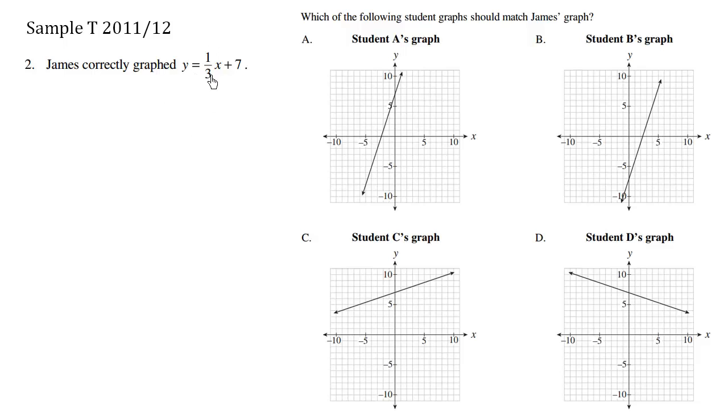So we have the graph y equals one-third x plus seven. Which of the following matches this graph?